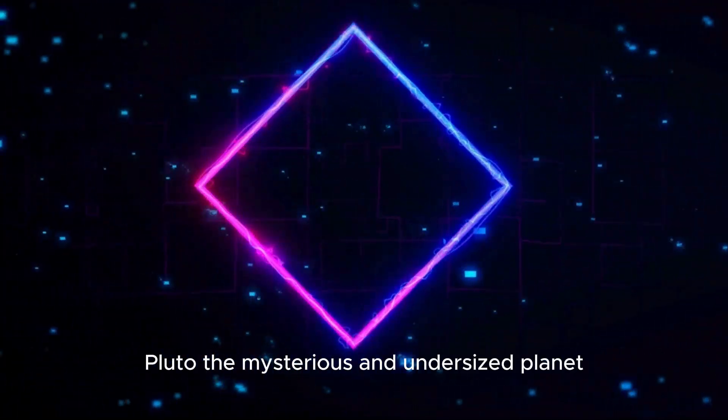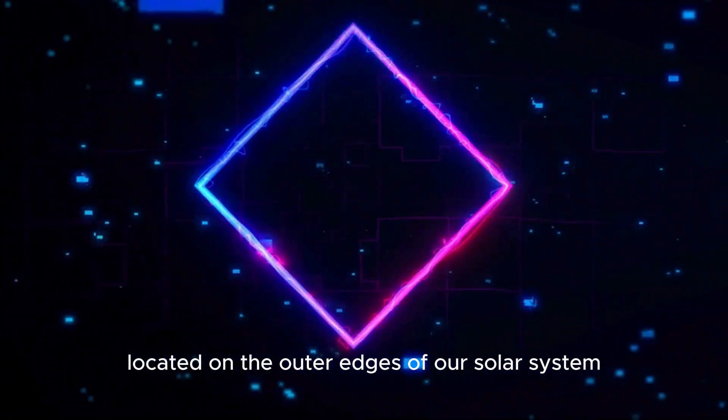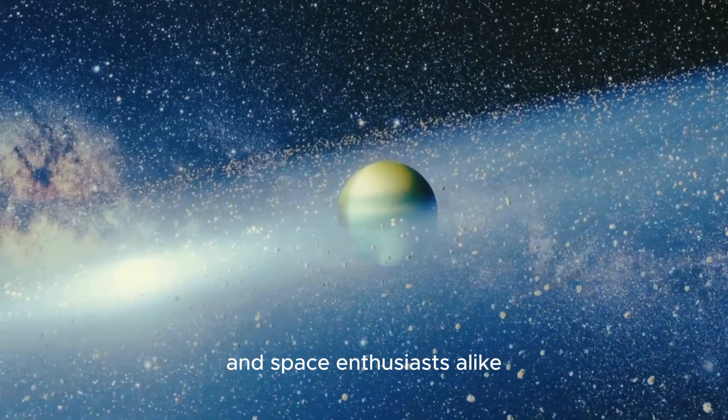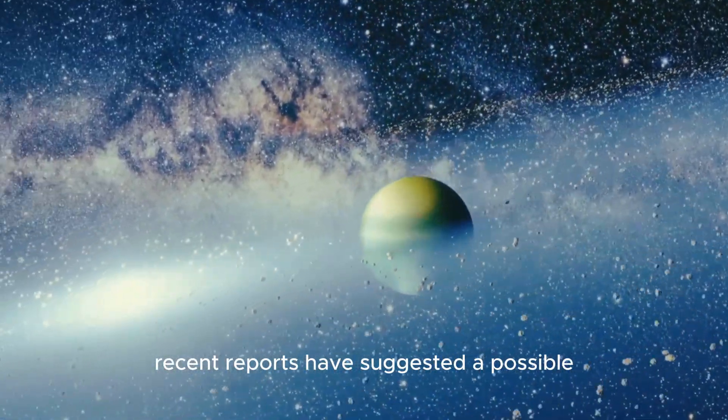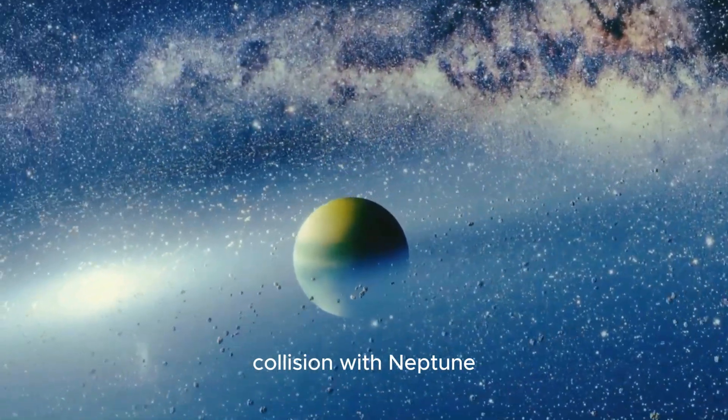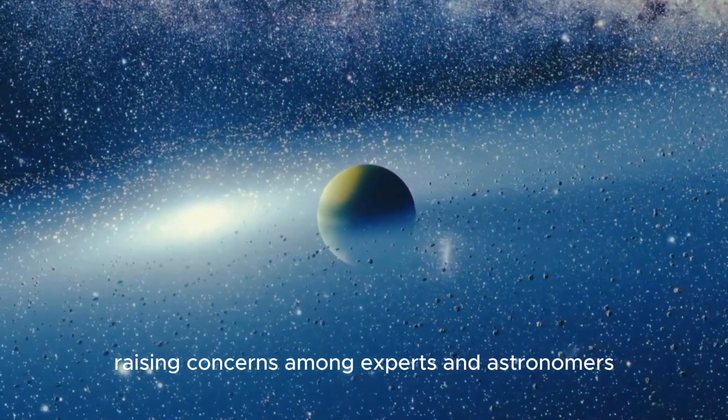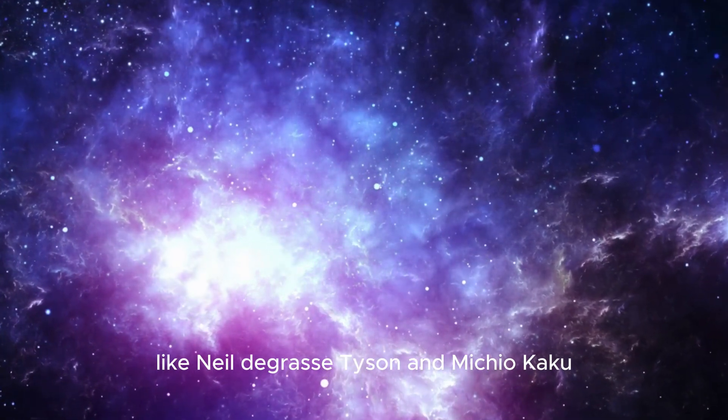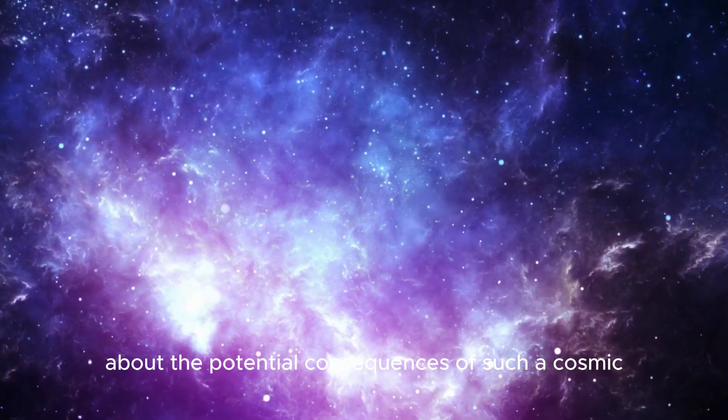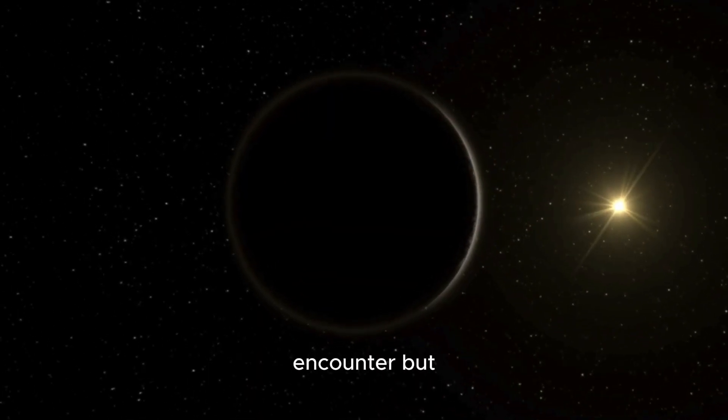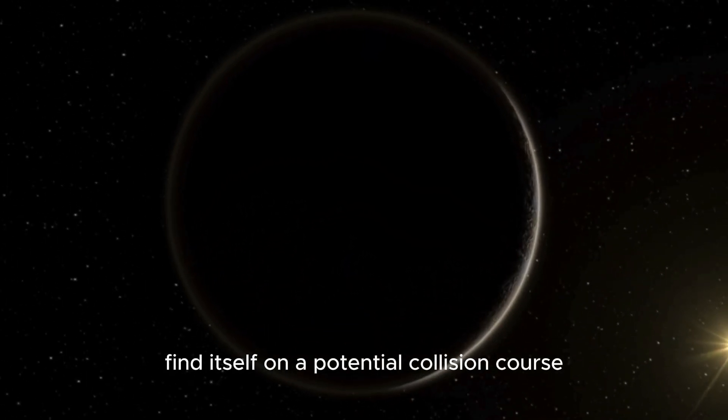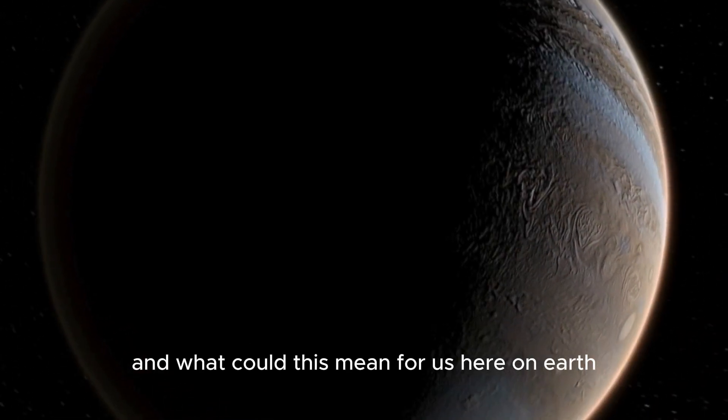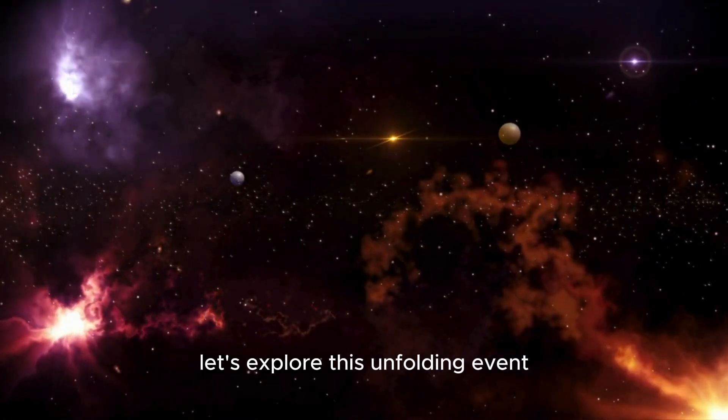Pluto, the mysterious and undersized planet located on the outer edges of our solar system, continues to captivate astronomers and space enthusiasts alike. Recent reports have suggested a possible collision with Neptune, raising concerns among experts and astronomers. Notable scientists like Neil deGrasse Tyson and Michio Kaku have raised alarms about the potential consequences of such a cosmic encounter. But how did Pluto find itself on a potential collision course with its distant neighbor? And what could this mean for us here on Earth? Let's explore this unfolding event.